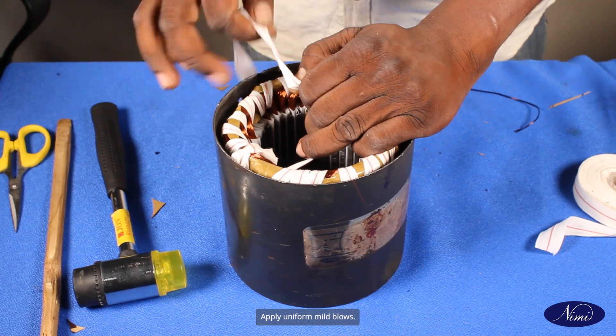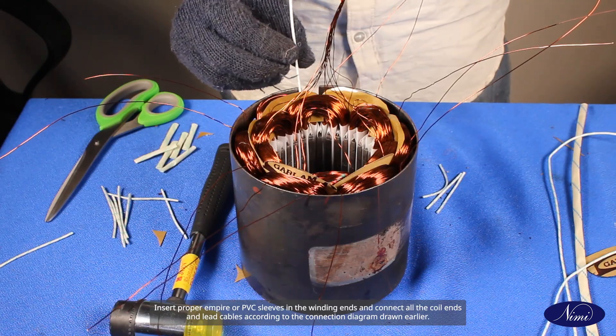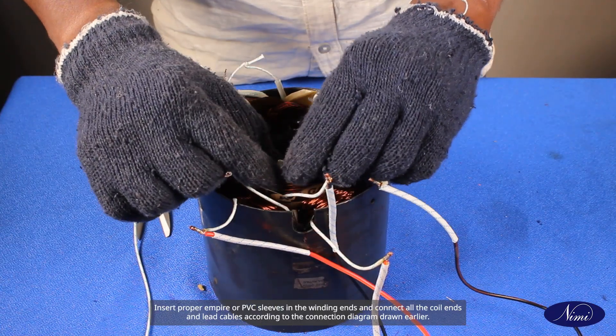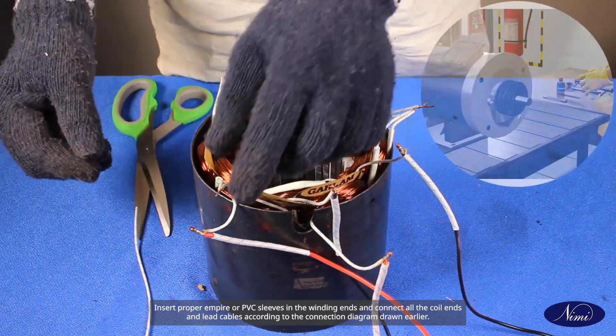Insert proper empire or PVC sleeves in the winding ends and connect all the coil ends and lead cables according to the connection diagram drawn earlier. Check the connection once again by comparing the group connection and developed diagram.